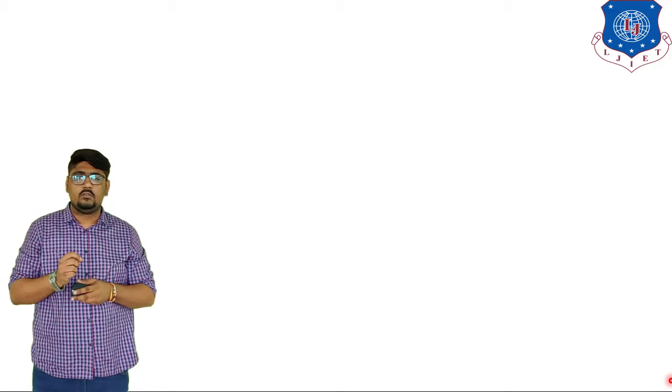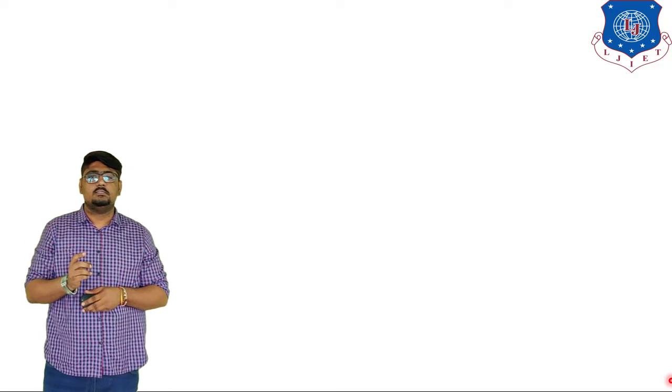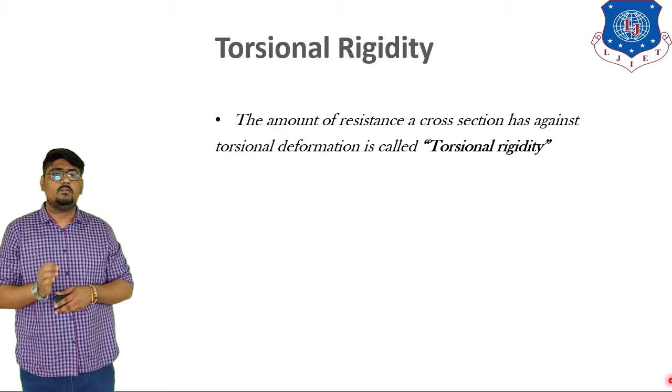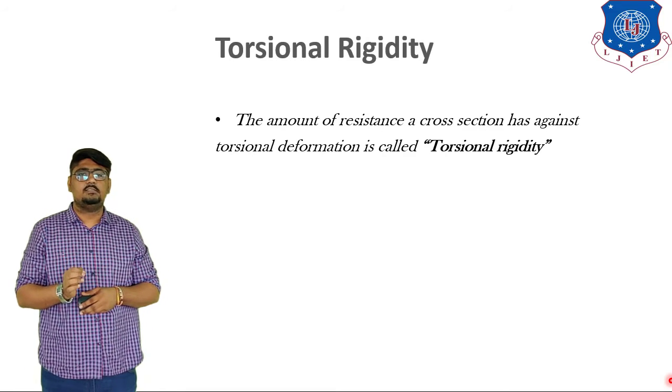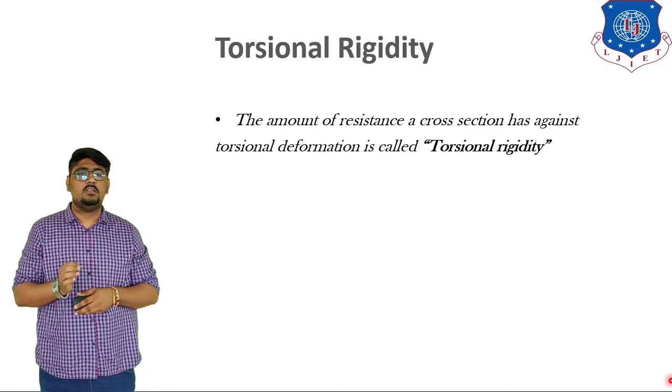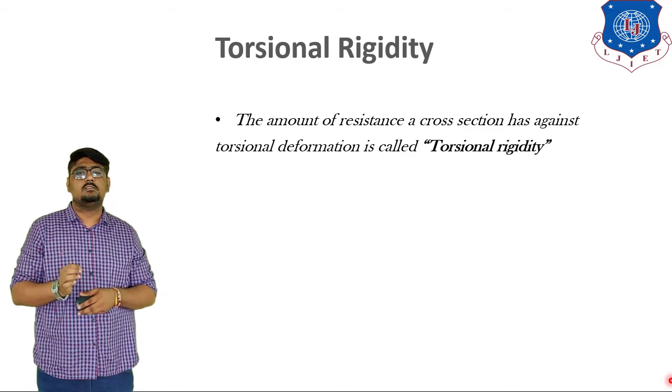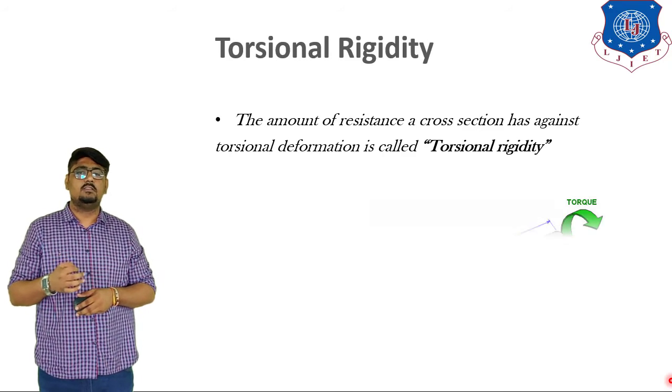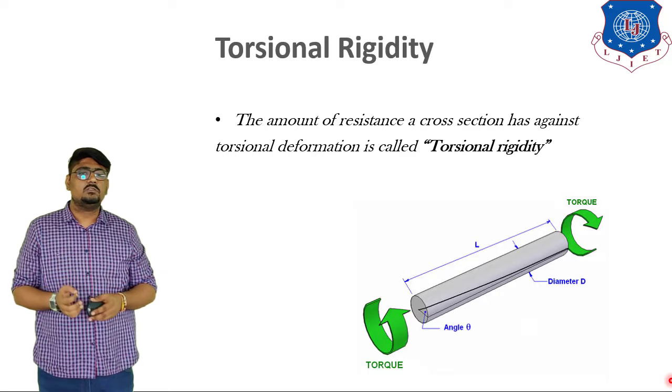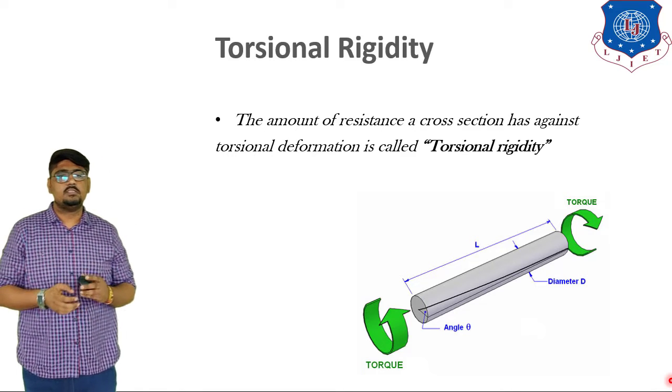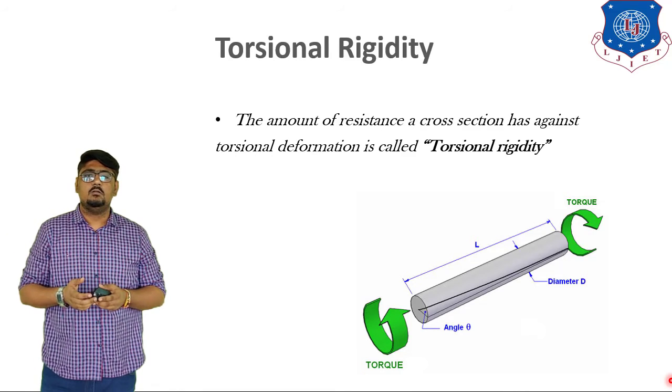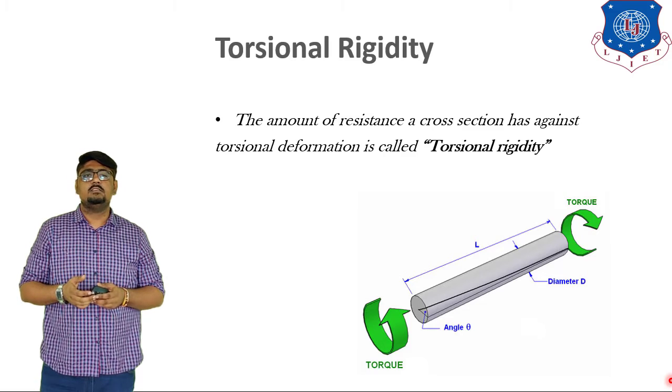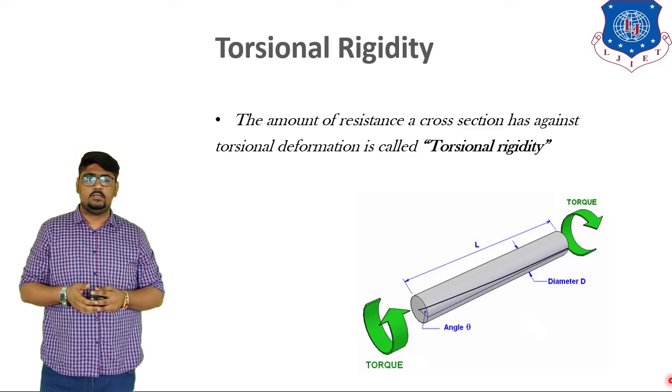Now, this material, because of the inertia, it will oppose the twisting movement. So, the total amount of resistance a cross-section has against the torsional deformation is known as torsional rigidity. Because of the inertia, it will resist the torsional movement.